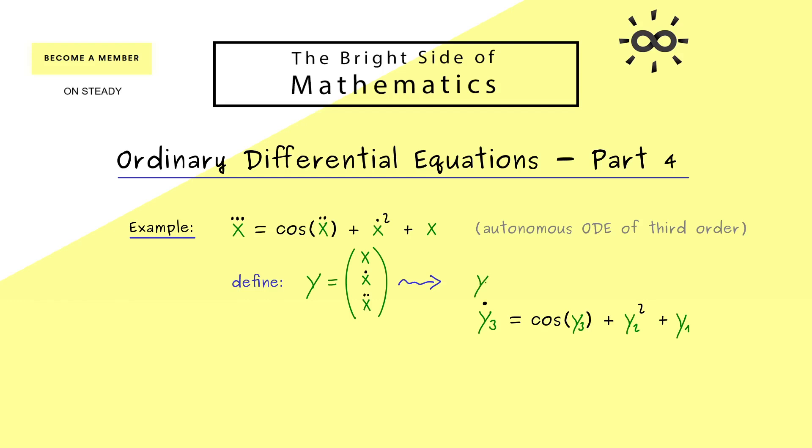However now we also have to make the connections between the other components. So you see y2 dot is equal to y3 and lastly we have that y1 dot is equal to y2. Okay and there you see this is all. This system of three equations has exactly the same information as this one ODE where we have a third order for the derivative.